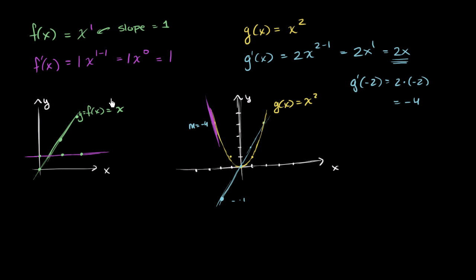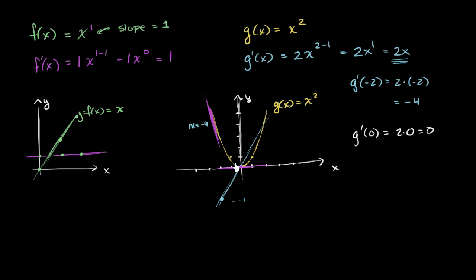What happens when you go right over here to x equals 0? Our derivative, g prime of 0, is telling us that the slope of g at x equals 0 is 2 times 0, which is 0. Well, does that make sense? If we go to our original parabola, the slope of the tangent line at x equals 0 — we're at a minimum point, we're at the vertex — the slope really does look to be 0.